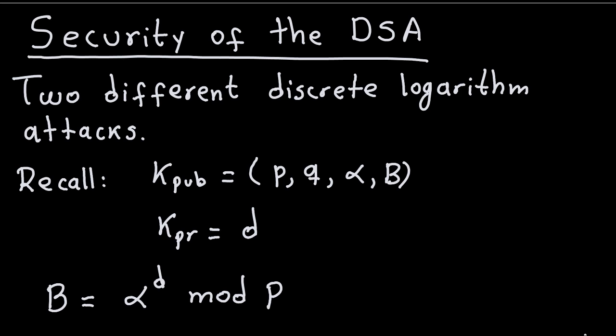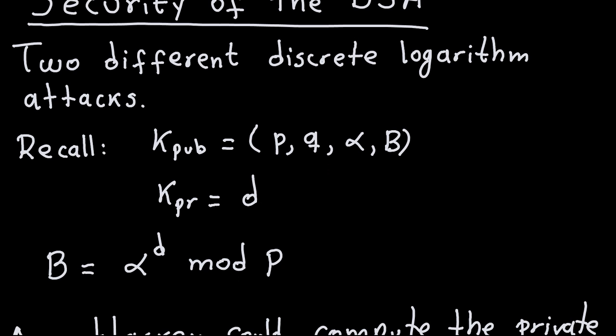The first topic is the two different discrete logarithm attacks that can be performed on the DSA to recuperate the private key, which would break the DSA signature. Once the attacker knows the private key, that attacker can sign any messages. The public key for the DSA consists of four numbers: two prime numbers where Q divides P-1, alpha is a generator of order Q, and B equals alpha to the power of the private key D.